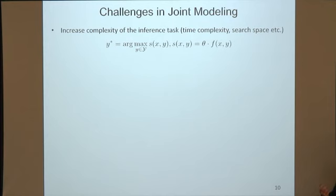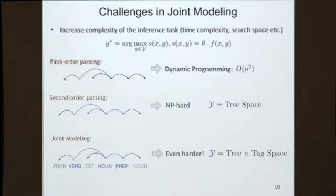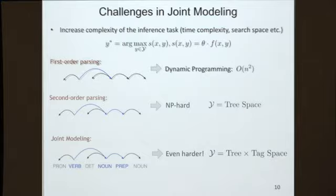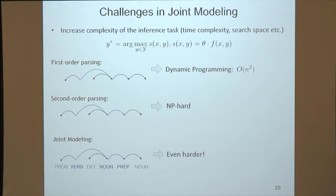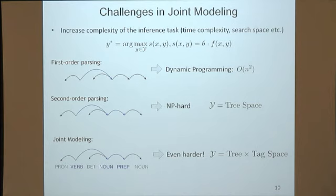Then why are we still using pipeline? The main reason is that using joint modeling will inevitably increase the complexity of the inference task, such as time complexity and search space. There's always a trade-off between inference complexity and model complexity. For instance, in first-order parsing we can find the optimal solution in polynomial time, while second-order parsing is already NP-hard. The inference in joint modeling is even harder, because the search space is a combination of tree and tag space, which is much larger than the tree space alone.